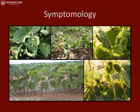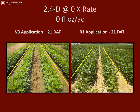This is some of the symptomology that we saw in the field. As you can see in the upper left-hand corner, the cupping of the trifoliant. In the middle picture, you can see the twisting of the stems and petioles — that epinastic response that you typically see with auxin herbicides — as well as some callusing that formed on the stems and leaves. All pictures on the left-hand side are from the V3 application and all pictures on the right-hand side are from the R1 application. All pictures were taken 21 days after the treatments were made. We had four-row plots and only treated the two center rows.